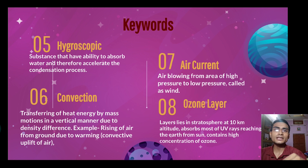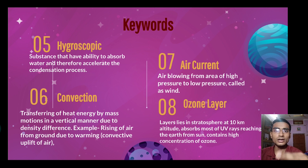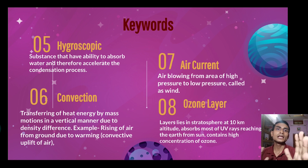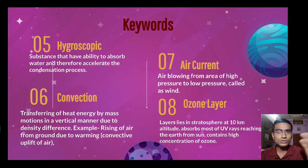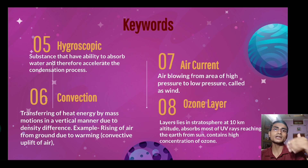The next keyword is convection. In convection, whenever there is a density difference, the convection process occurs. Heat transfer happens along with density difference — only then does convection take place. So it is the transfer of heat energy by mass motion in a vertical manner due to density difference.